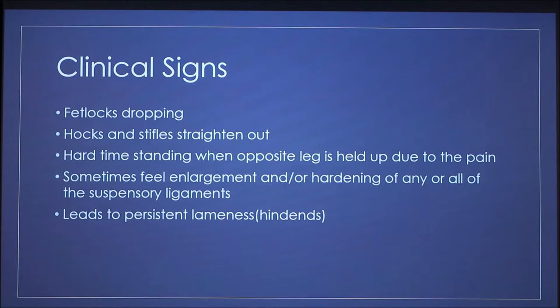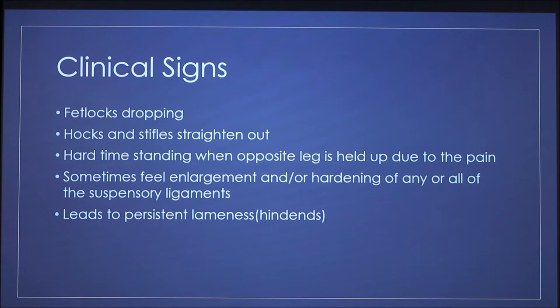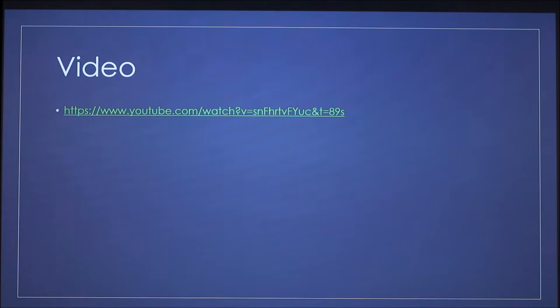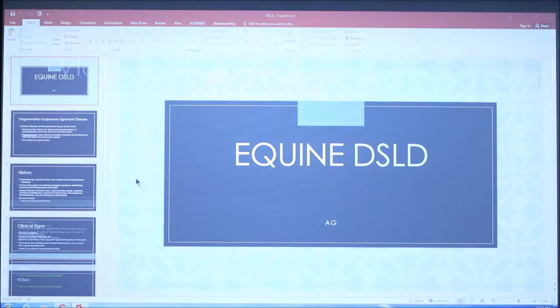Clinical signs include the fetlocks dropping — the fetlock is essentially the ankle of the horse, and it drops really low to the ground, which you can see clearly when the horse steps. You can also tell by the hocks and stifles straightening out. Affected horses have a hard time standing on that leg when you pick up the opposite leg due to excruciating pain, and you can sometimes feel hardening on the suspensory ligaments. It almost always presents in the hind legs — about 90% of the time, with only occasional front leg involvement.